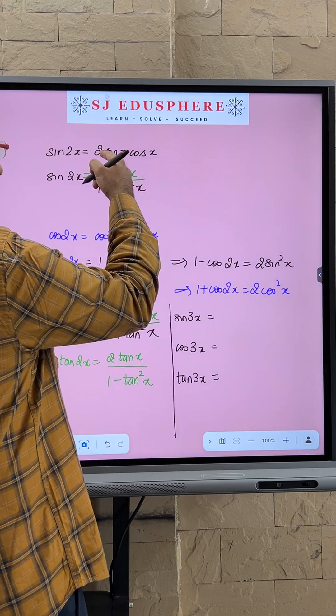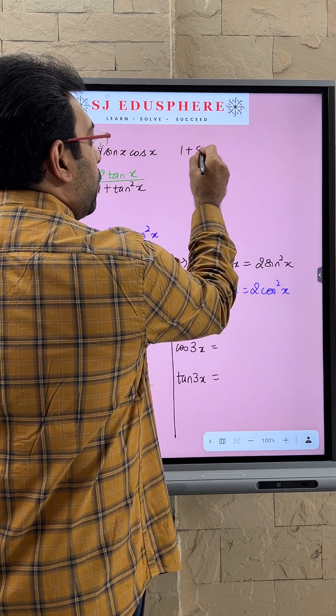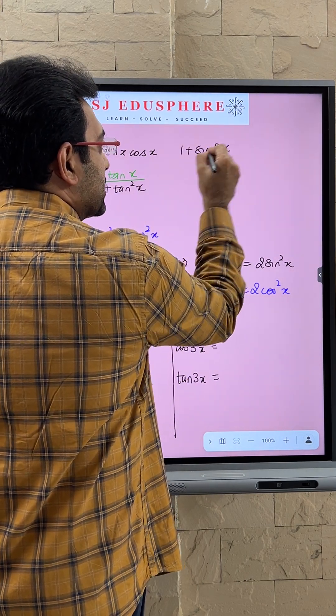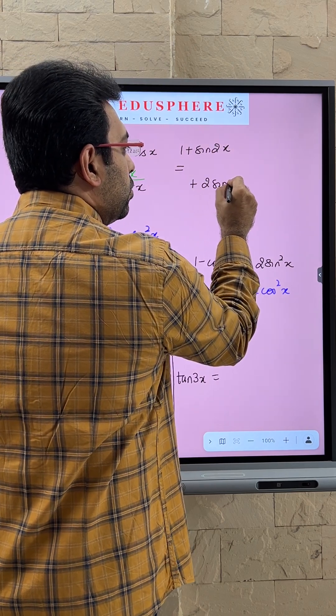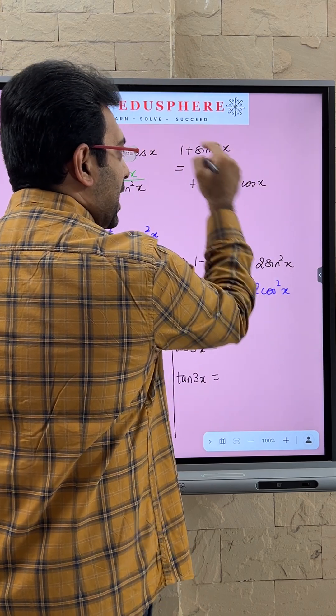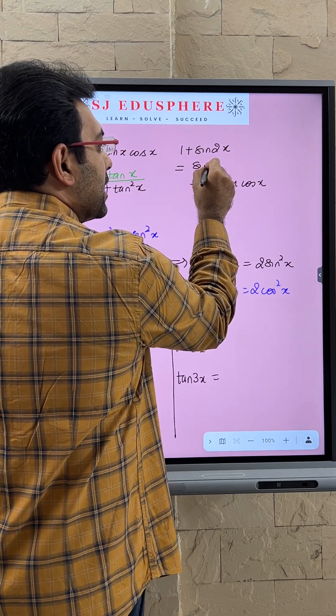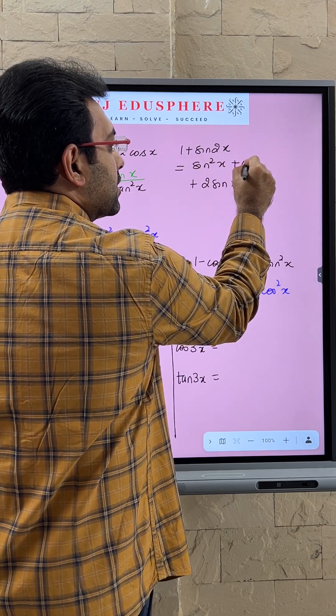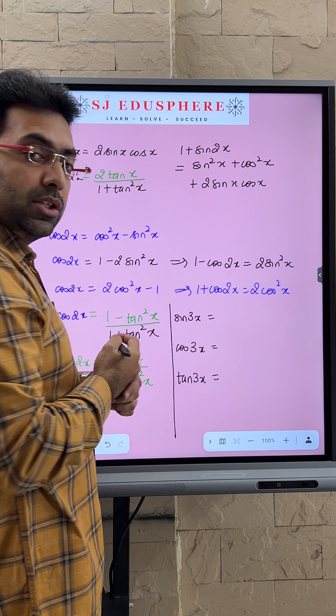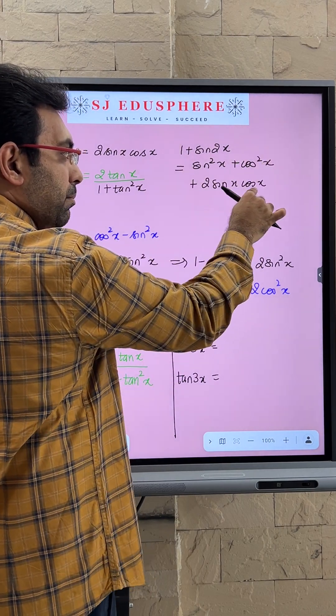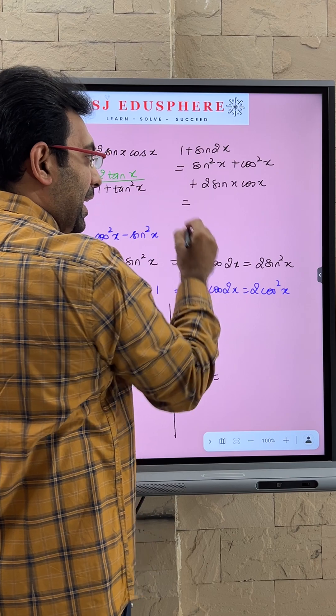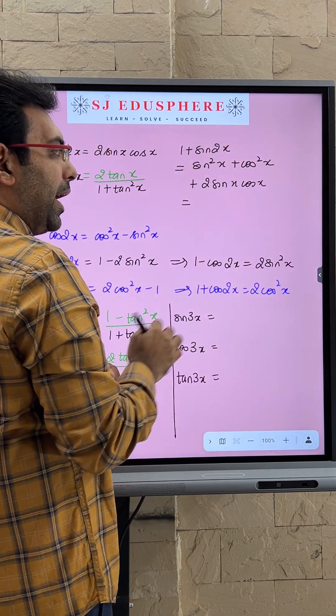Similarly over here, if I write 1 plus sine 2x, well, sine 2x is actually 2 sine x cos x, and I can write 1 as sine square x plus cos square x. So is this a square plus b square plus 2ab? Can I write this 1 plus sine 2x as cos x plus sine x the whole square?